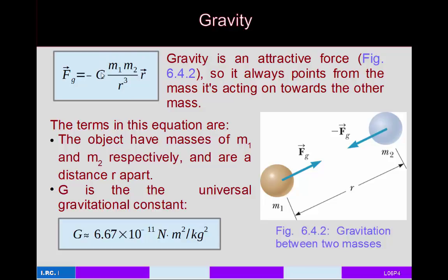The universal gravitational constant G has an approximate value of 6.67 × 10⁻¹¹ N·m²/kg². When you multiply G by two masses in kilograms, the kg² units cancel. Dividing by distance squared while multiplying by the displacement vector — net meters squared — cancels too, leaving you with newtons for the force, as expected.